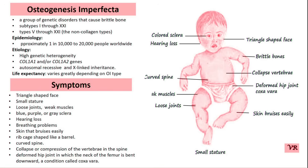Osteogenesis Imperfecta was first described by the British physician Sir Harry G.G. Gardner in 1895. Gardner observed and documented the condition in his medical practice, noting the characteristic features of brittle bones, frequent fractures, and other related symptoms. The comprehensive understanding of Osteogenesis Imperfecta and its genetic basis has evolved significantly since Gardner's initial observation, leading to the identification of genetic causes in the various types.